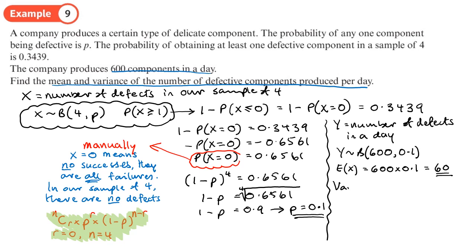And I need to find the mean E(Y). So that's n times p, 600 times 0.1, which is 60. And the variance, Var(Y), n times p, so that's 60, times by 1 minus p. 1 minus p is 0.9, I've got that from before. So that will give me 54.